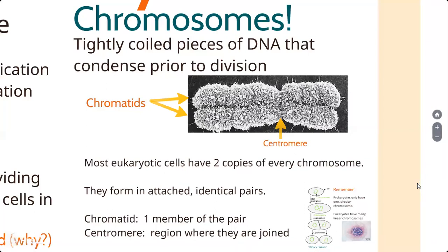Many eukaryotic species are diploid, meaning they have two copies of each chromosome. Humans have two copies of 23 chromosomes - 46 total. Chimpanzees have two copies of 24. Plants can get unusual: some have quadruploid or octuploid sets. Strawberries, for example, have eight copies of each chromosome. The ploidy number refers to how many copies there are. Humans are diploid (di = two); strawberries are octuploid (octo = eight).